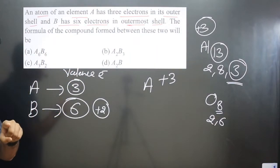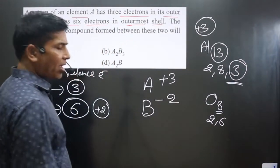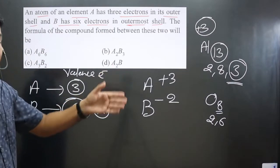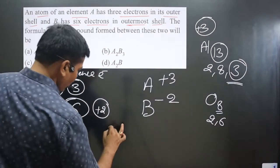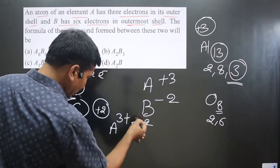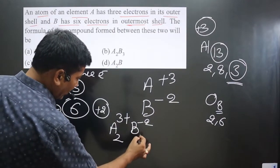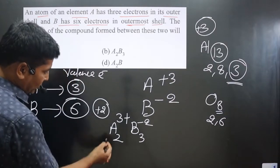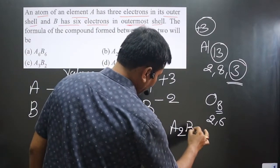So B element has six valence electrons, then it has tendency to gain two electrons. Hence B will carry minus two charge. Now we know the charge of these elements and we can figure out the formula. We have A with power plus three, B with power minus two. We can crisscross this number. Two will come on left side and three will go on the right side. So A₂B₃, from here we get A₂B₃ is the compound.